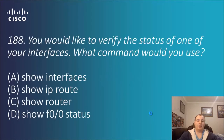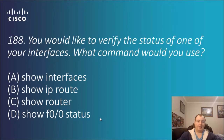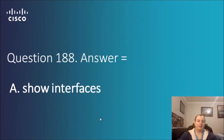Question 188: you would like to verify the status of one of your interfaces — what command would you use? The options are: interfaces, IP route, router, and F0-0 status. This is simply knowing the command — the answer is show interfaces.